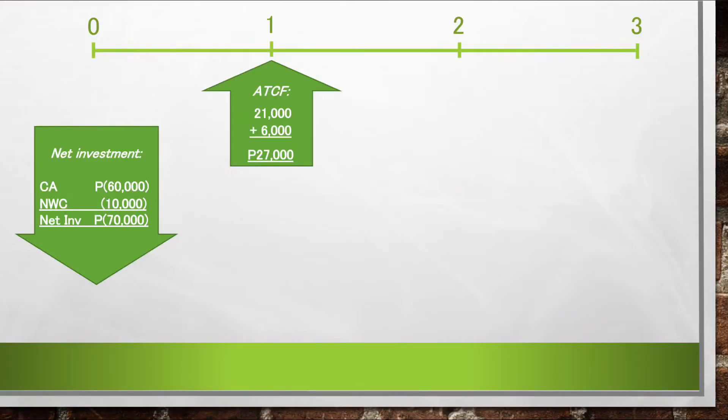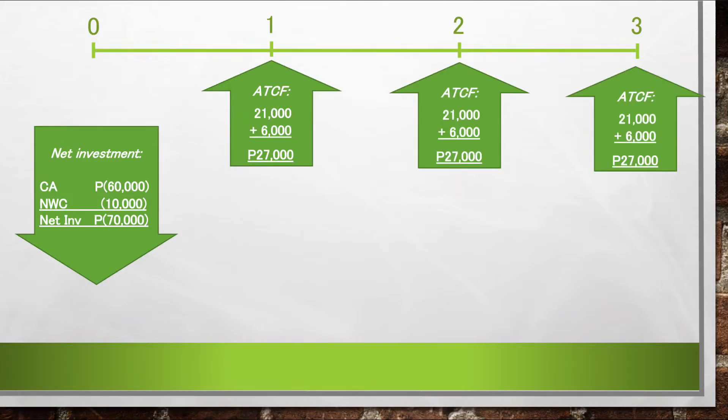This after-tax cash flow of 27,000 pesos will be generated in year 1, year 2, and year 3. Hence, this is an annual amount.